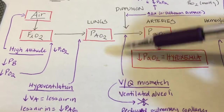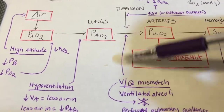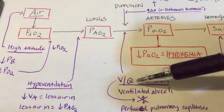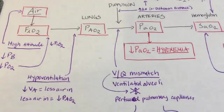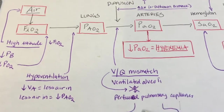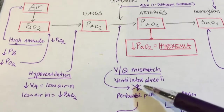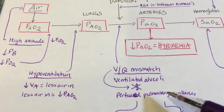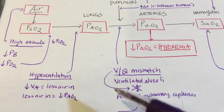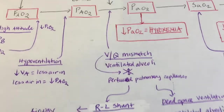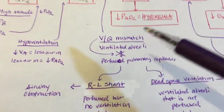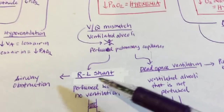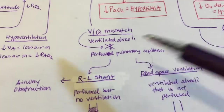The final cause affecting the process of getting air from lungs into arteries is VQ mismatch. V stands for ventilation, Q stands for perfusion. VQ mismatch is simply when ventilated alveoli are not perfused by pulmonary capillaries, or perfused capillaries have no ventilated alveoli around them — a mismatch preventing gas exchange. The two extremes of VQ mismatch are right-to-left shunt and dead space ventilation.